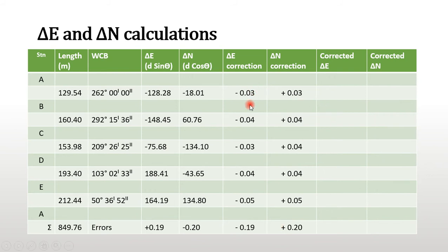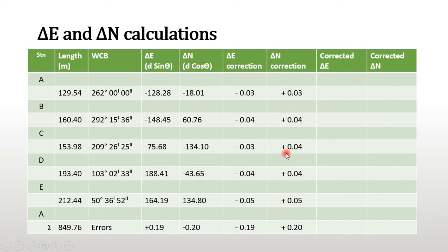We multiply 2.354 times 10 to the power minus 4 by each traversy leg in turn to work out the correction for the respective legs. When we add all these corrections we get 0.20, which is the figure we need. Adding this correction to the error in change in northings gives zero, so we are okay and can proceed to apply the corrections in the table.